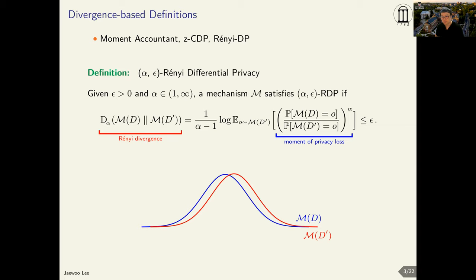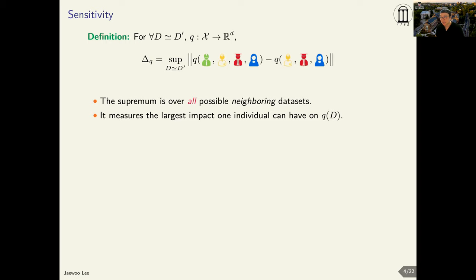An important concept in differential privacy is sensitivity. The sensitivity of a query function Q is defined as the largest difference of function outputs between two neighboring datasets. Intuitively, this sensitivity measures how much difference one individual can make on the output of a function. In our context, it measures how much influence one individual can have on the gradient.